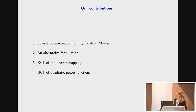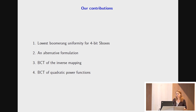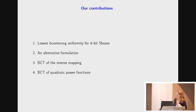What we did in this work is first prove that the lowest possible boomerang uniformity for a 4-bit S-box is equal to 6. We also provide a new formulation of the definition of the entries in the boomerang connectivity table. This new formula is easier to handle, especially when we consider S-boxes with differential uniformity 4. Thanks to this formula, we computed the BCT of two infinite families of S-boxes: the inverse mapping and some quadratic power functions over the field F_{2^n} when n is even.